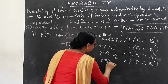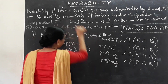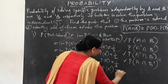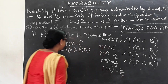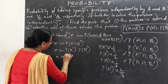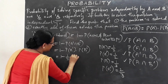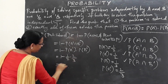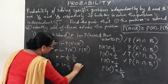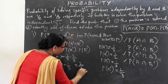The probability of B is 1/3, so the probability of B' is 2/3. The probability of A' is 1/2. So the calculation is: 1 minus (probability of A' into probability of B') equals 1 minus (1/2 into 2/3), which gives 1 minus 1/3, that is 3 minus 1 over 3, which equals 2/3.